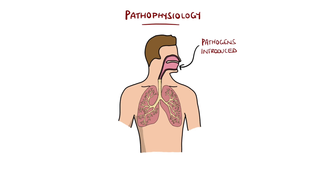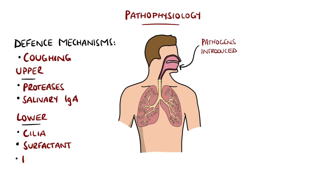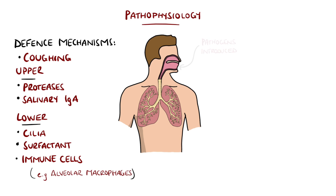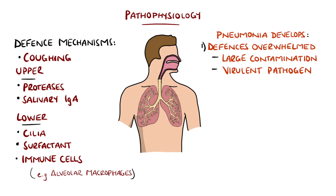Pathogens are often introduced into the airways and lungs through the air, but there are defense mechanisms — such as coughing, proteases, and salivary IgA in the upper airway, and cilia, surfactant, and immune cells like alveolar macrophages in the lower airway — that prevent infection. Pneumonia occurs when contamination is large enough to overwhelm these defenses, or when a particularly virulent pathogen is introduced.